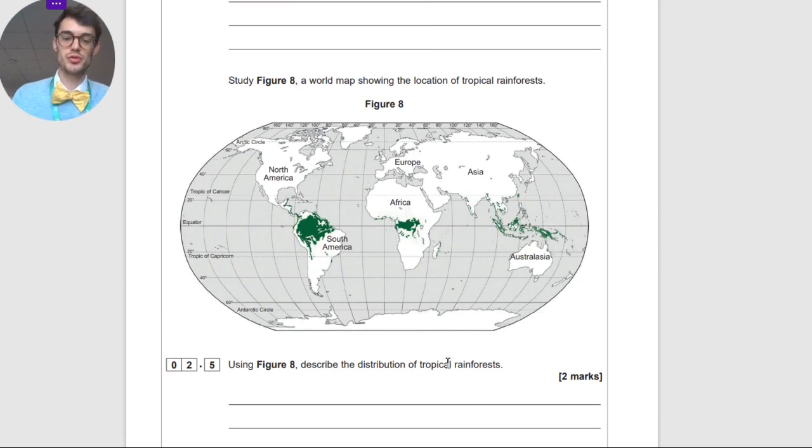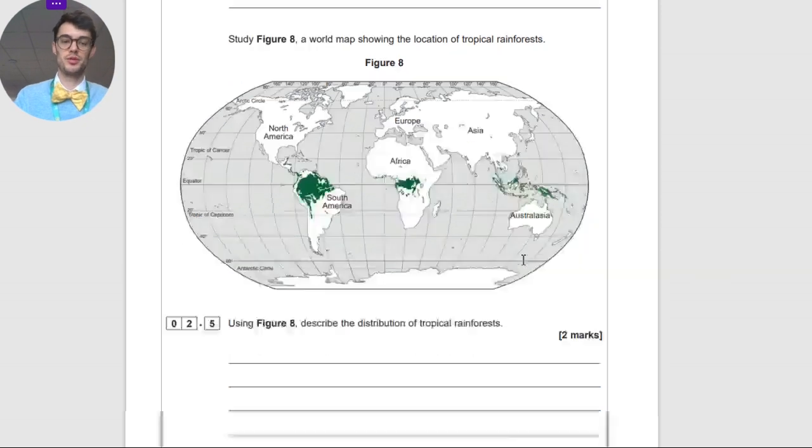Describe the located distribution of tropical rainforests. Well, you've got the equator here. They're all along the equator, and the second mark would be in continents such as Africa, South America, and Southeast Asia. Brilliant. That would be two marks.